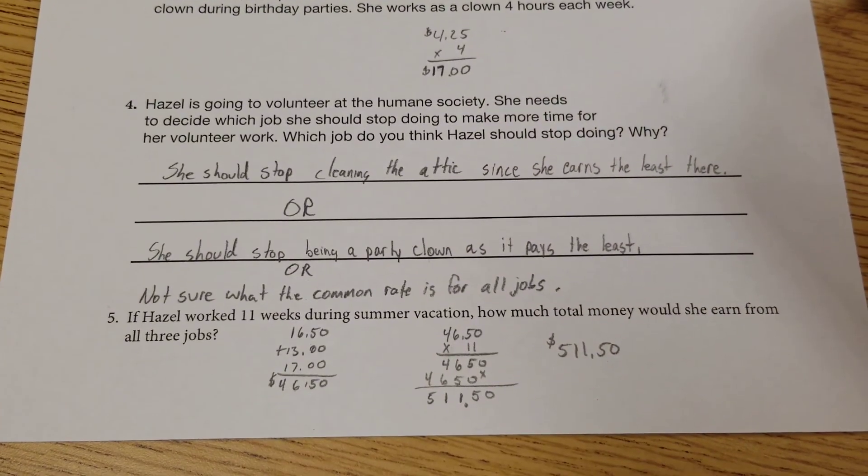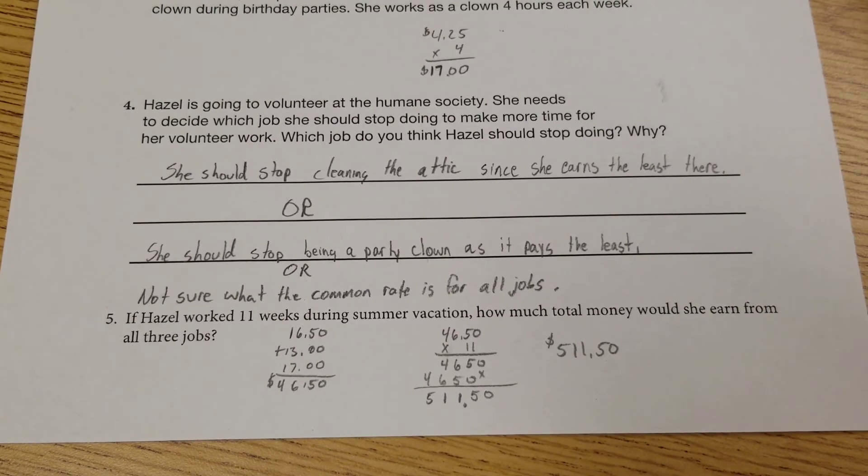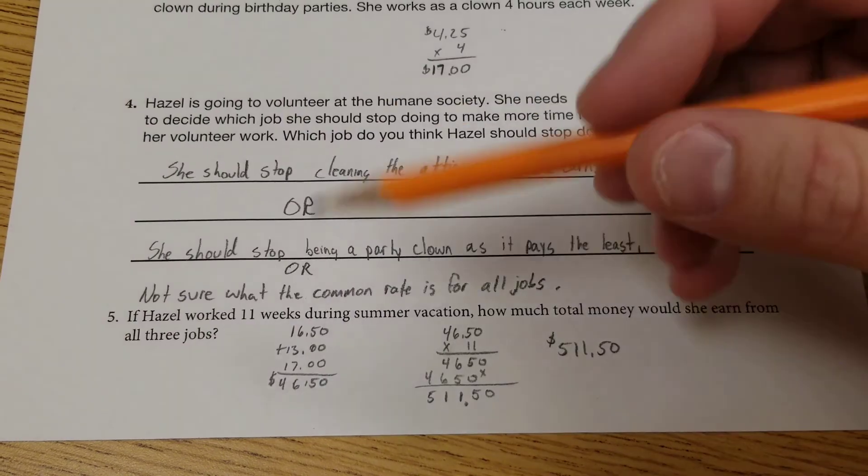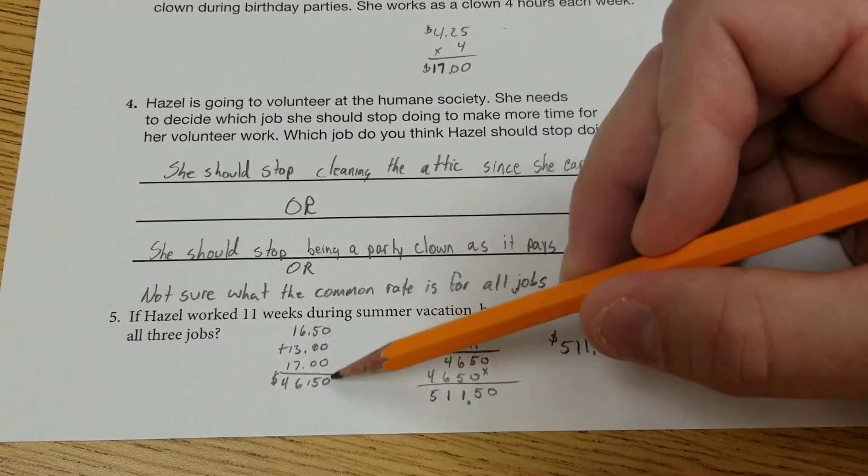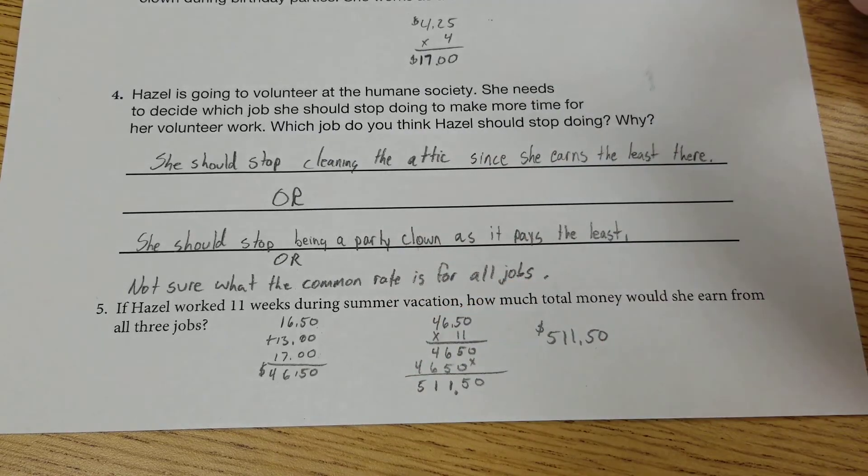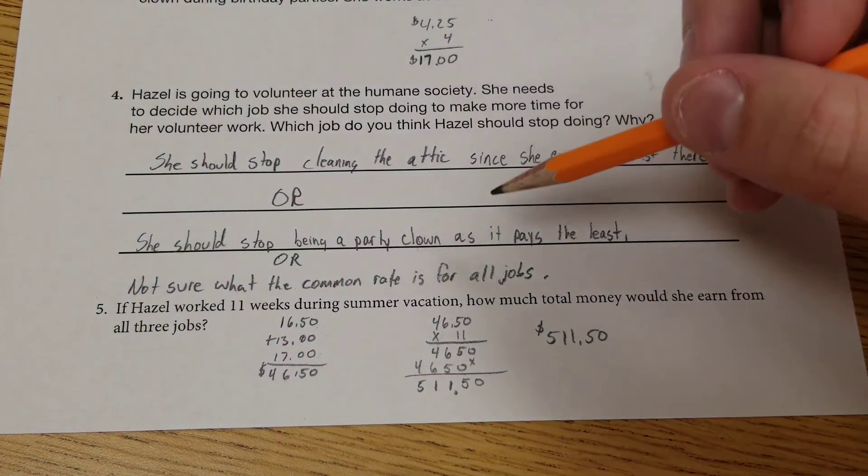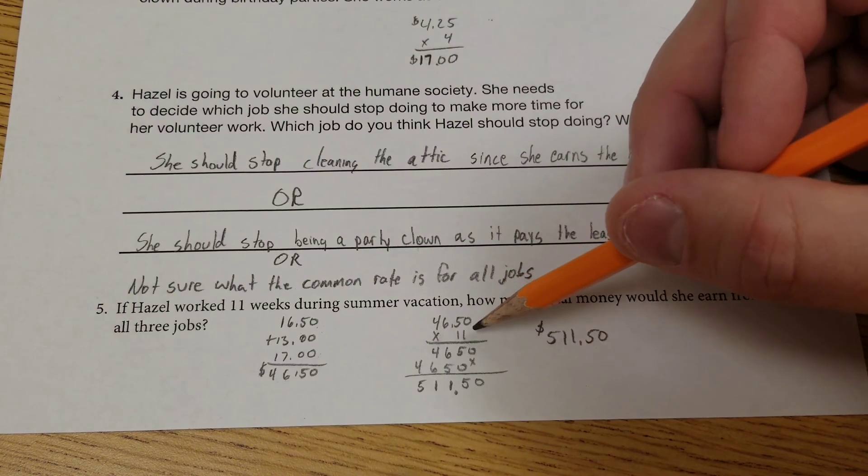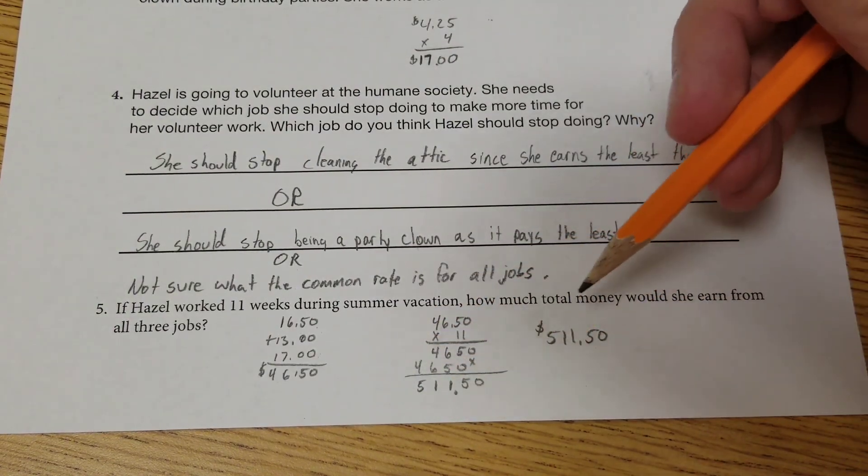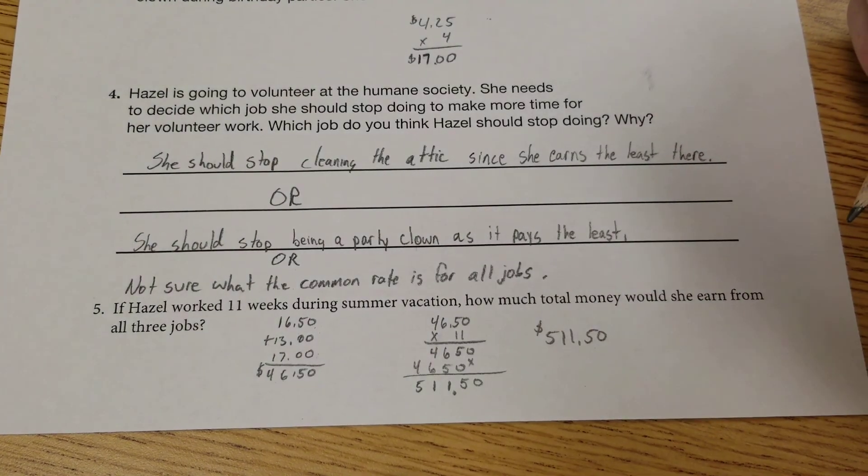So for the last one, we're going to assume that she does all these jobs every week for 11 weeks. So what I did first is I added up the three jobs to see how much she makes in a week, which is $46.50. Then I took my $46.50 times the 11 weeks. Here's the math for that. And I got a total of $511.50.